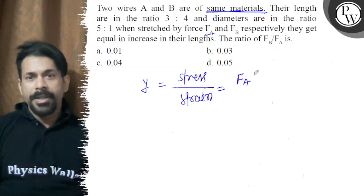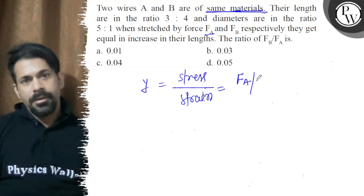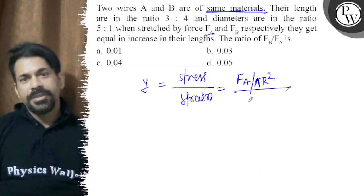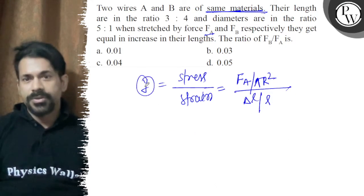So FA by area A is pi R square and divide by your strain that is del L by L, and if this is constant I can say